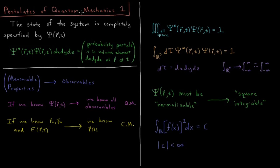So starting with postulate 1, postulate 1 of quantum mechanics is that the state of the system is completely specified by the wave function, psi of rt. So in three dimensions, this would be a function of x, y, and z. In one dimension, r would just be x. So it's a function of some spatial dimensions and time.